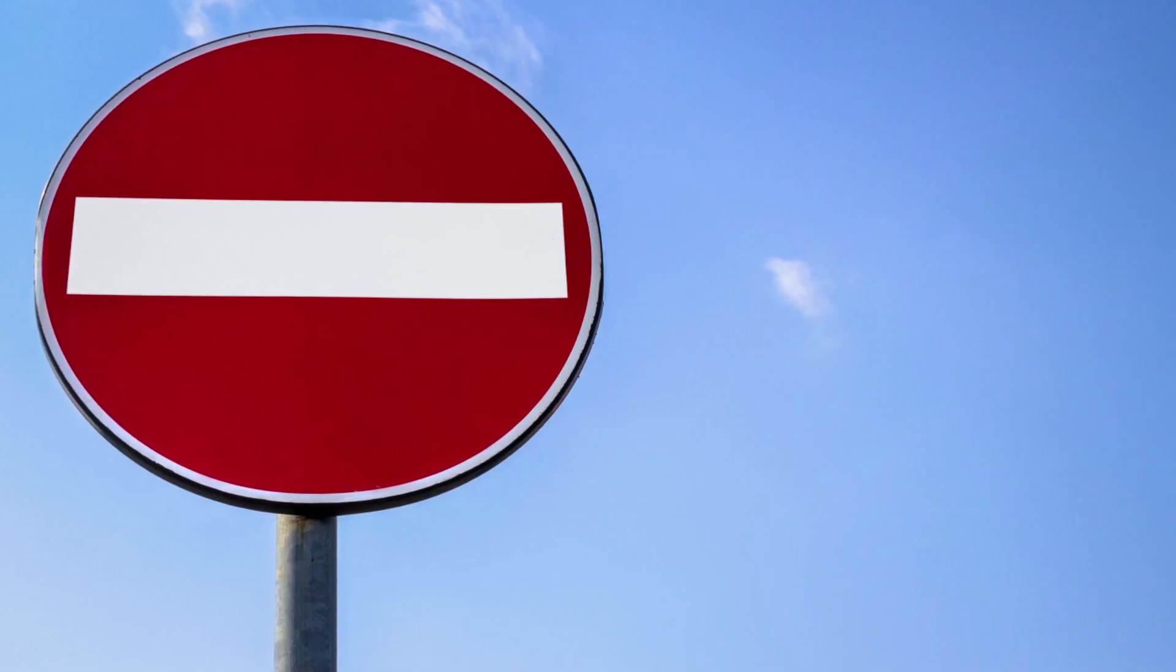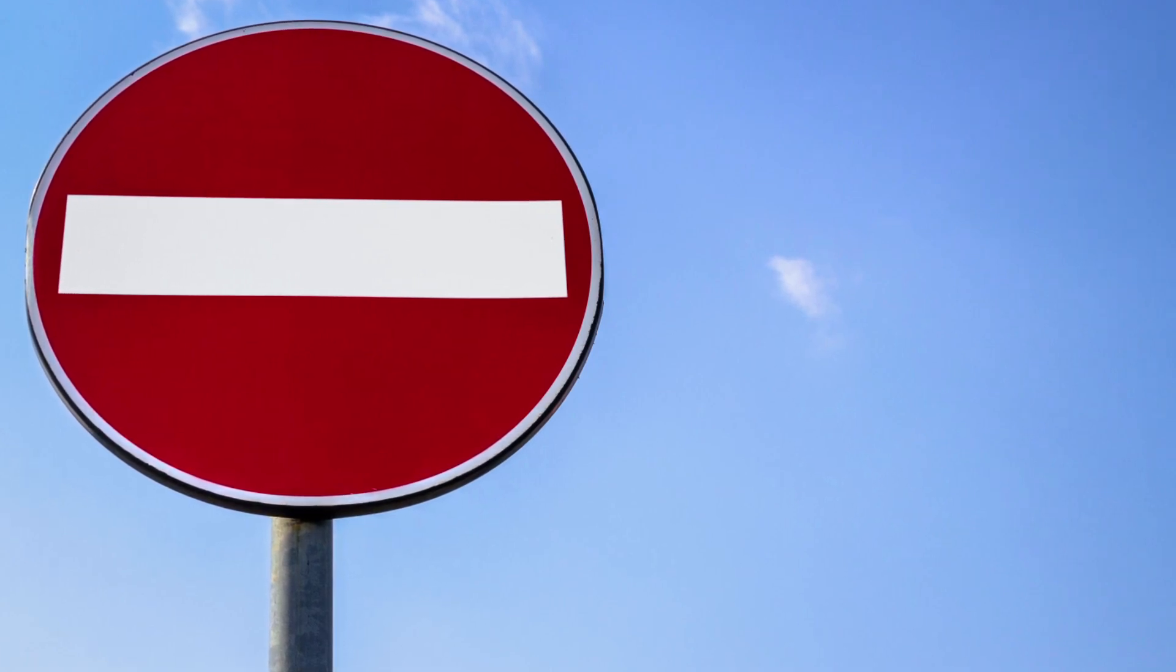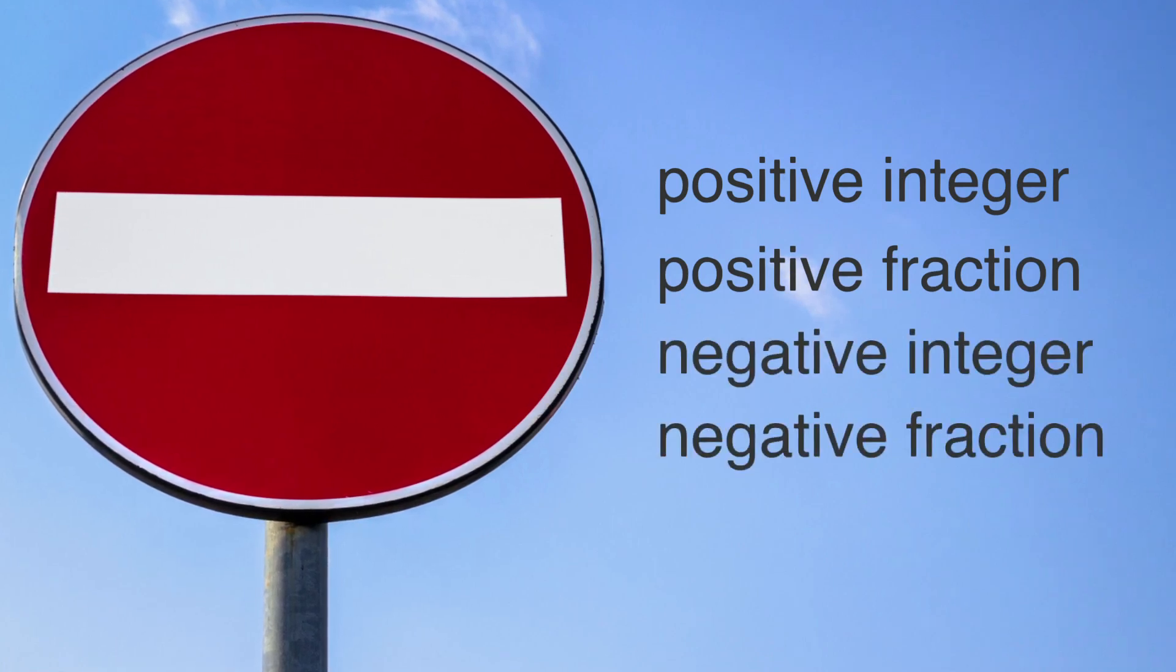If you aren't given any restrictions, a good rule of thumb is to try at least two of the following types of numbers: a positive integer, a positive fraction, a negative integer, and a negative fraction.